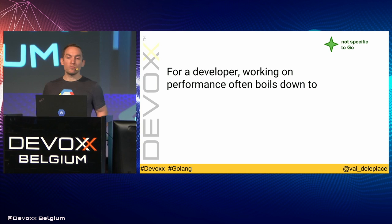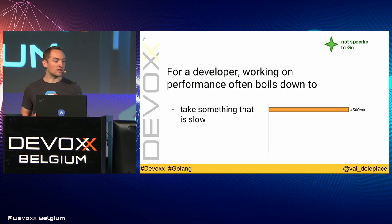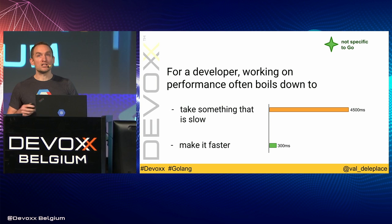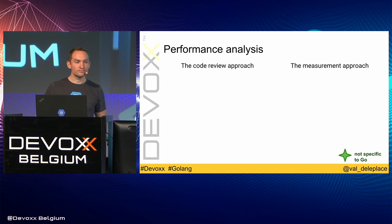How much is too slow and how much is fast enough are of course important questions. A developer working on performance is about taking something that is slow — say 4.5 seconds — and making it faster, like 300 milliseconds. How much is too slow and how much is fast enough? In general, the answer is: it depends.